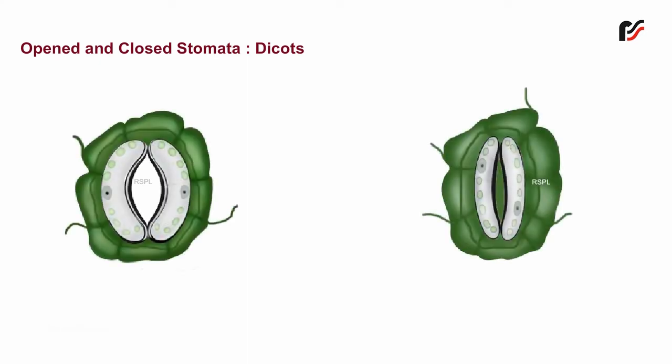Opened and Closed Stomata Dicots. Stomata are tiny pores in the epidermis of leaf through which gaseous exchange occurs.